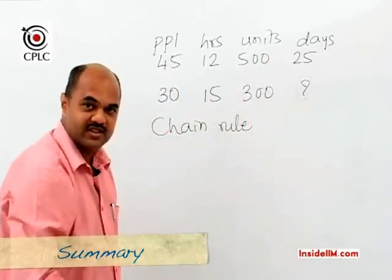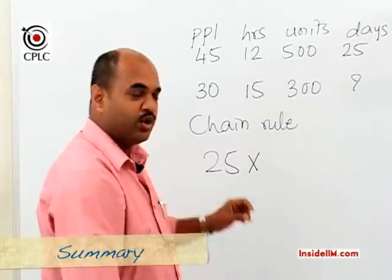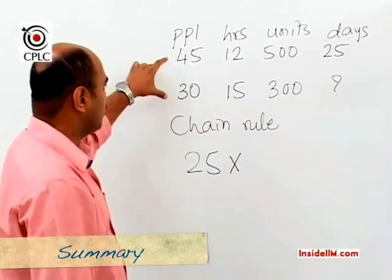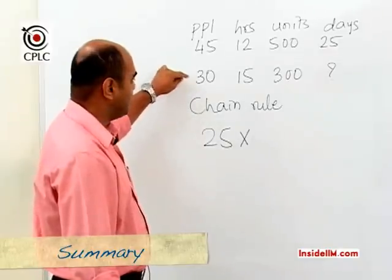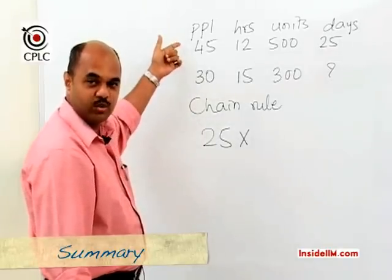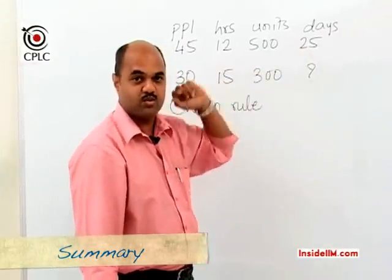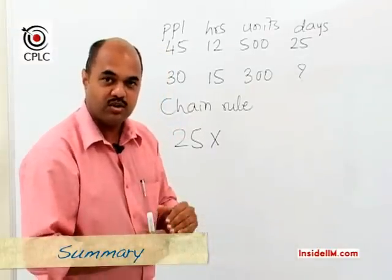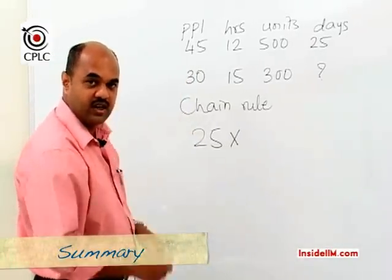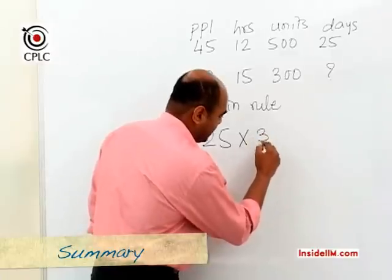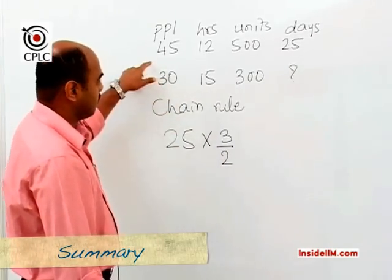The question asks for the number of days, so we start with the previous number of days, which is 25. We relate each parameter to the number of days. The number of people changes from 45 to 30, which is 2/3 of earlier. Since people are inversely proportional to days — fewer people means more days — the days become 3/2 of earlier. So we multiply 25 by 3/2. We have now accounted for the number of people.